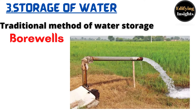Modern method number two is bore wells. Earlier, wells were dug to reach water underground, but it was not possible to draw deep-seated groundwater. Now, with the help of electric pumps, it is possible to do so. Bore wells are dug for this purpose — they are very deep but very narrow. These are the two modern methods of storing water, which help us get rainwater throughout the year.